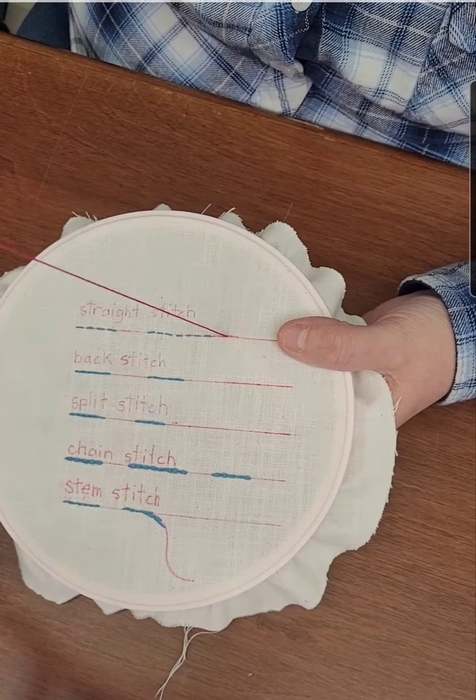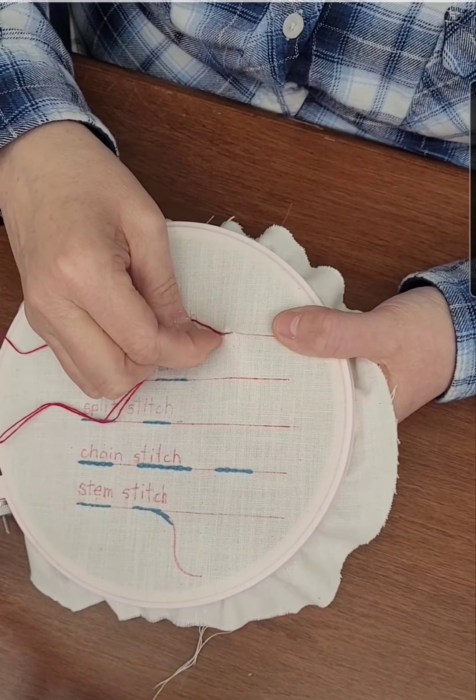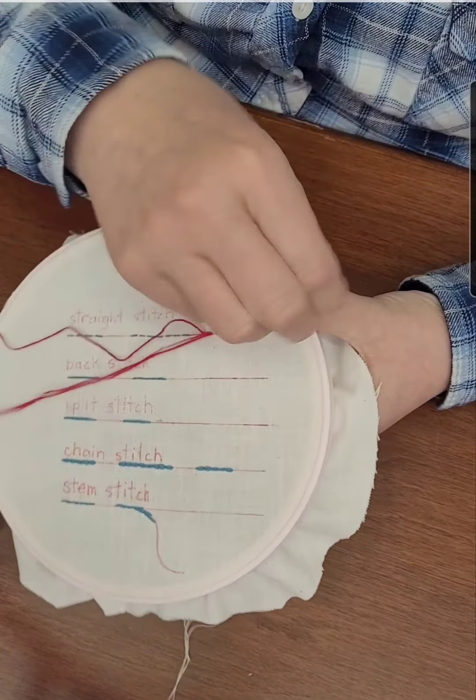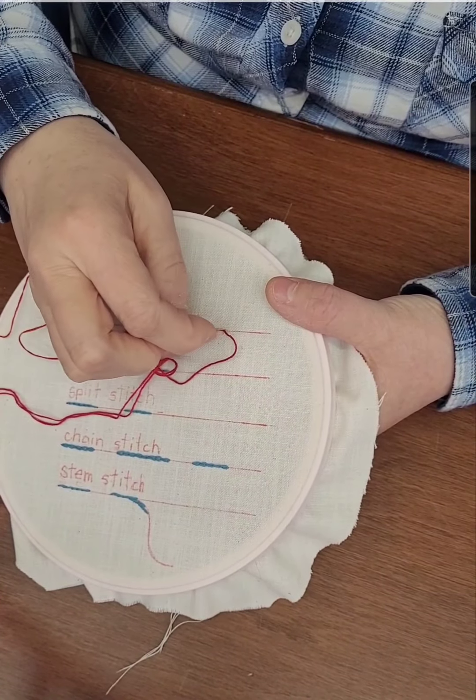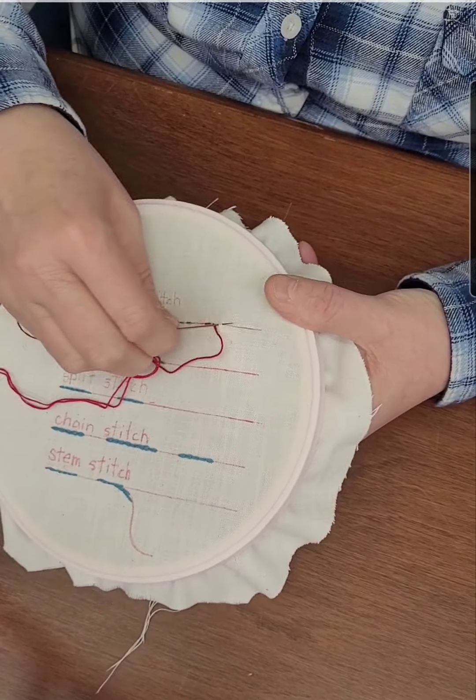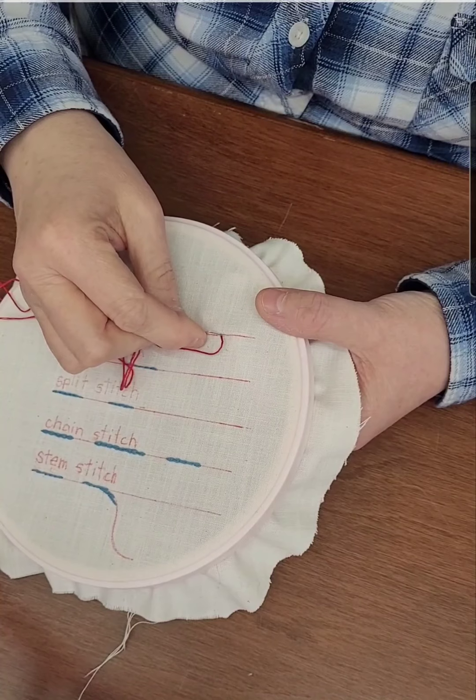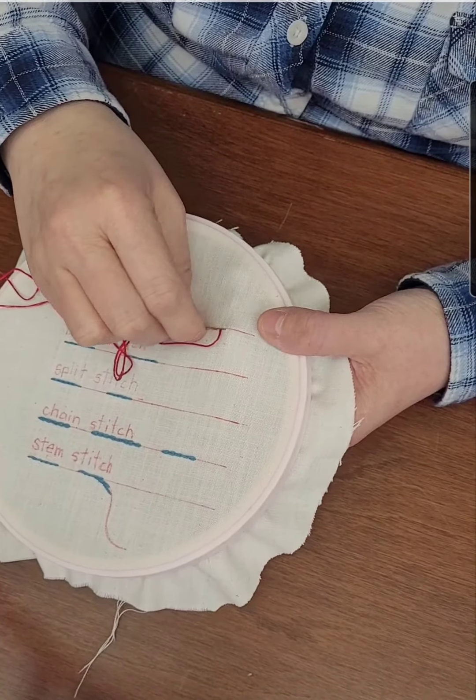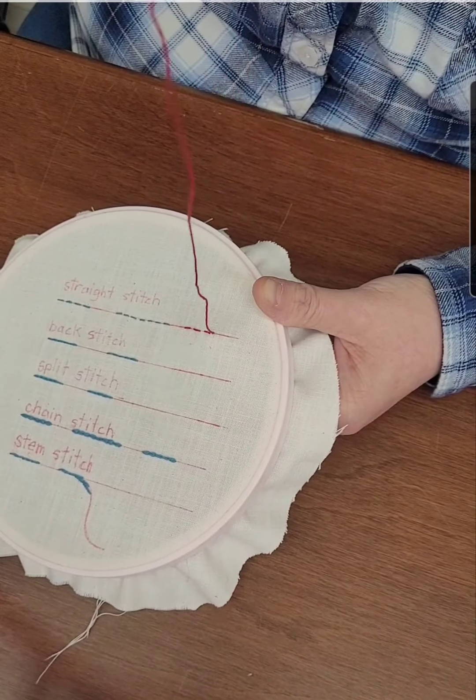Okay, so here is a demonstration of all of the outline stitches that I showed you this morning. The first one I'm working on is the straight stitch, also called the running stitch. So you can see here I'm going down and then coming up all in one go.